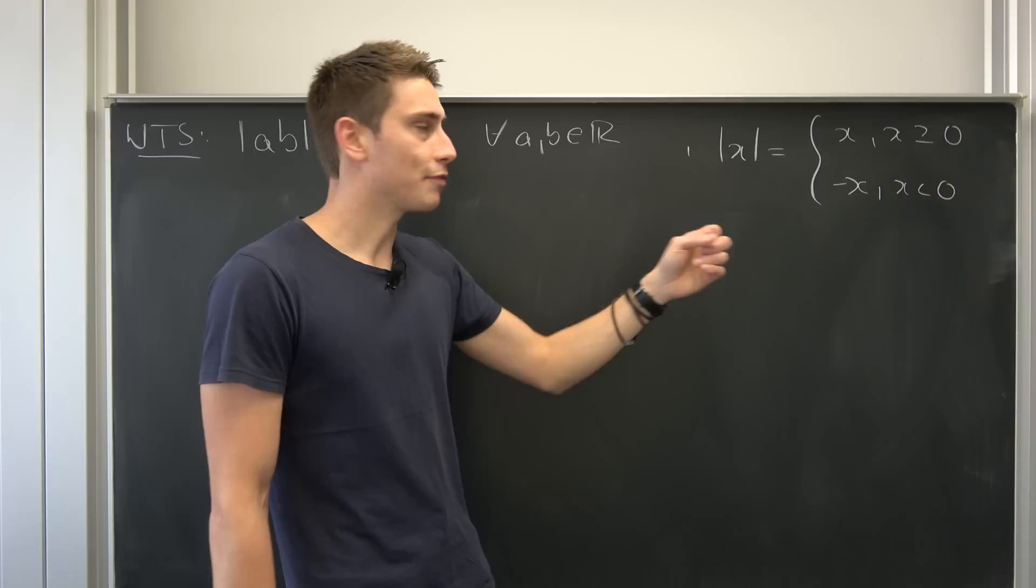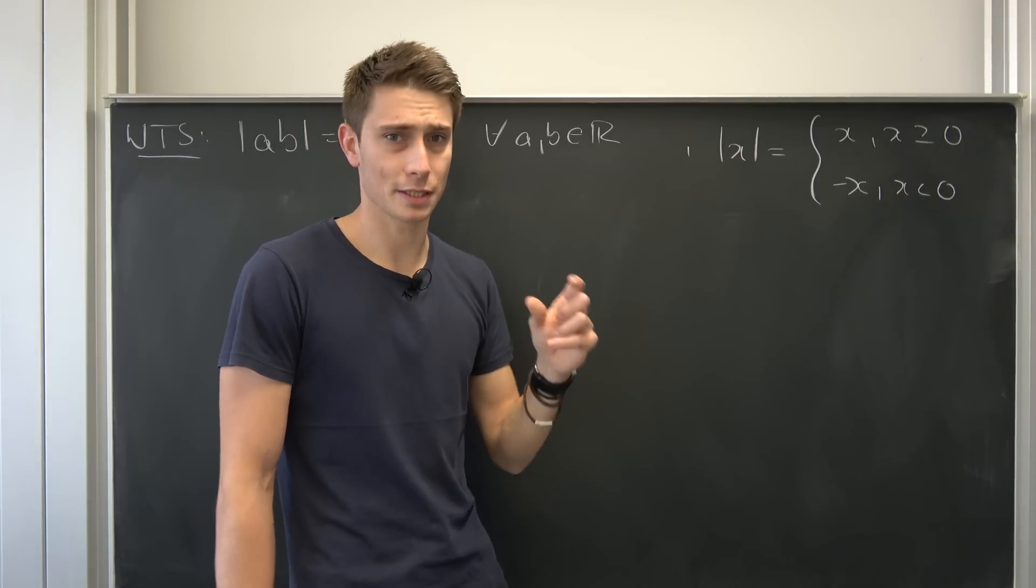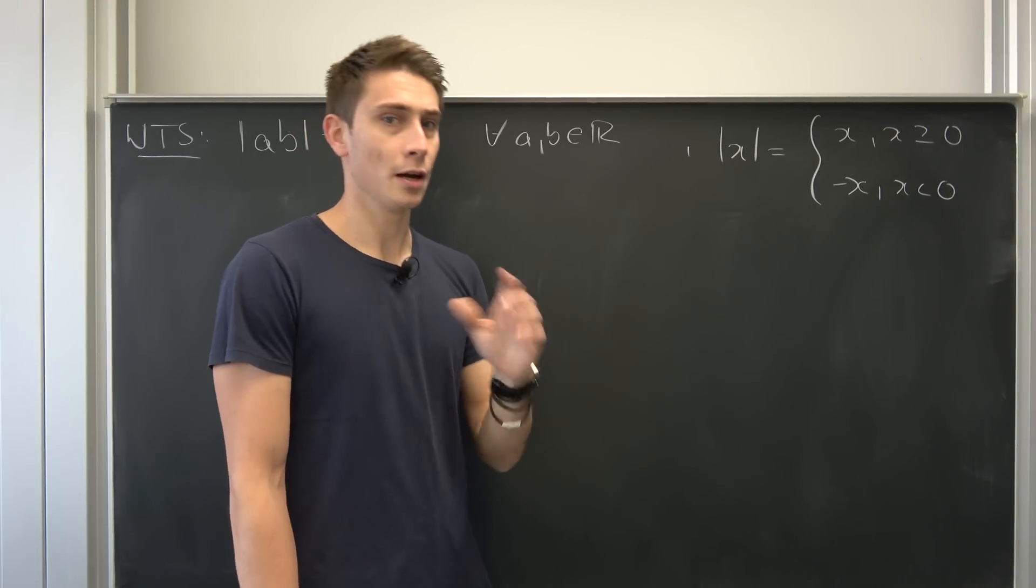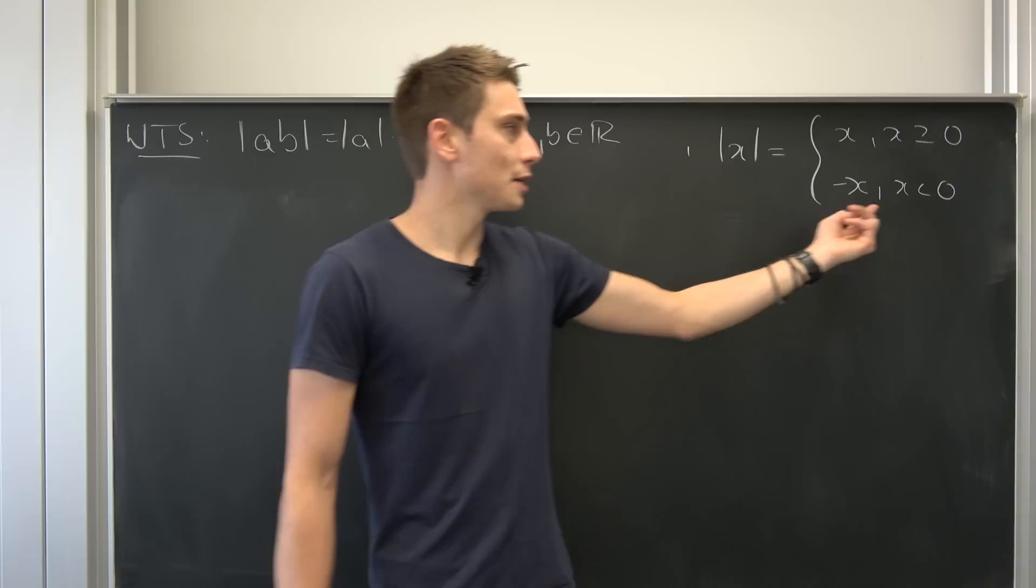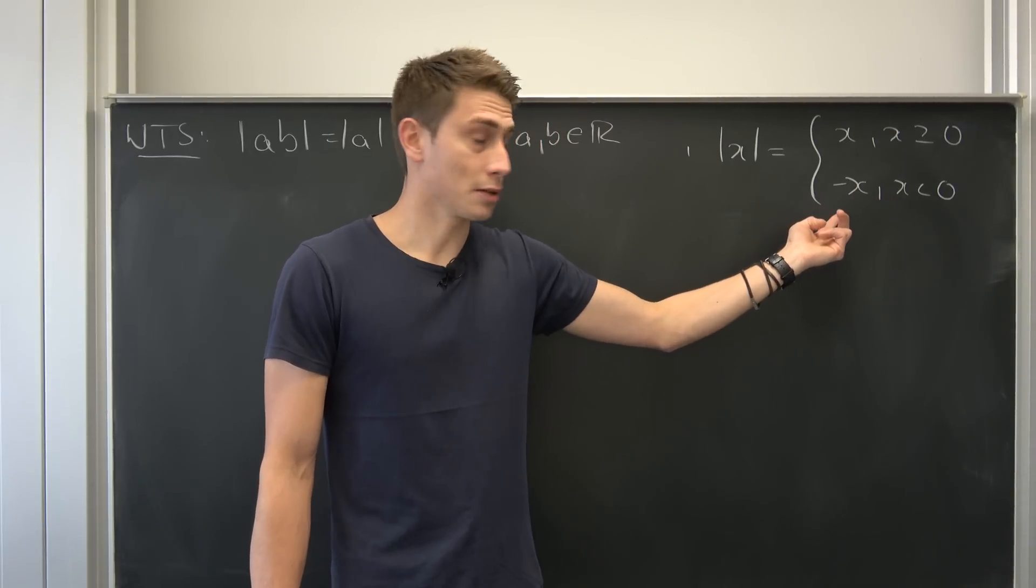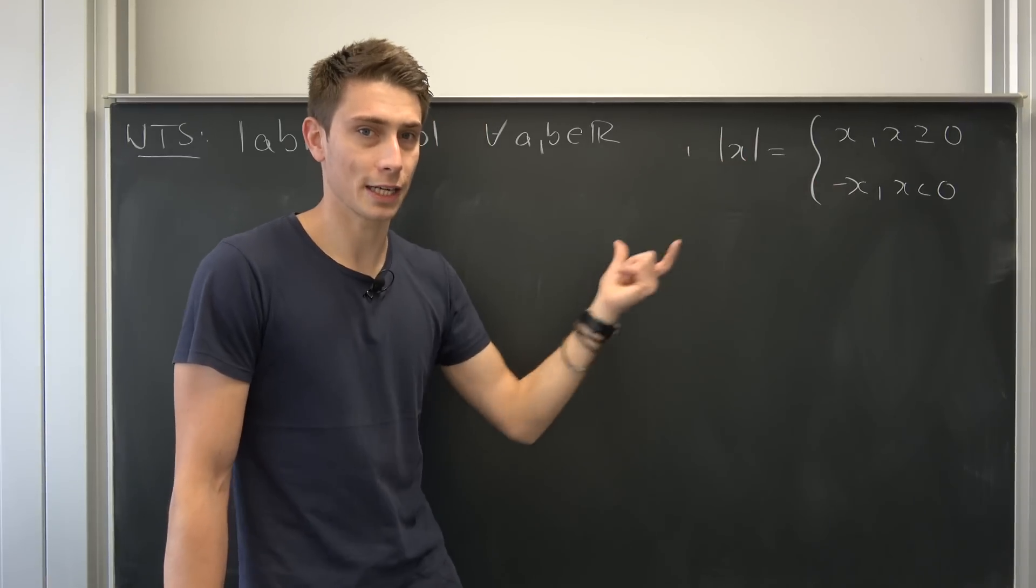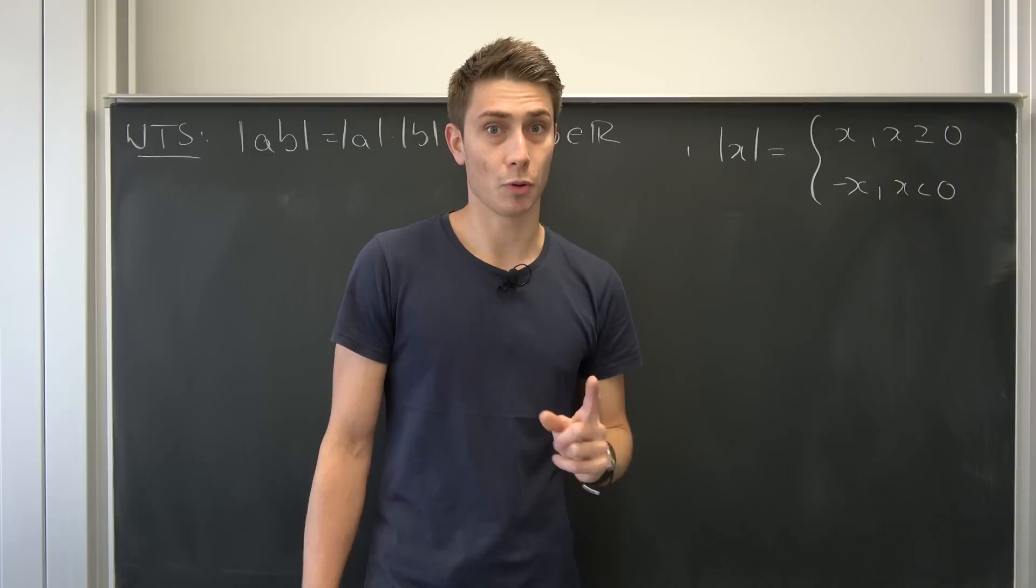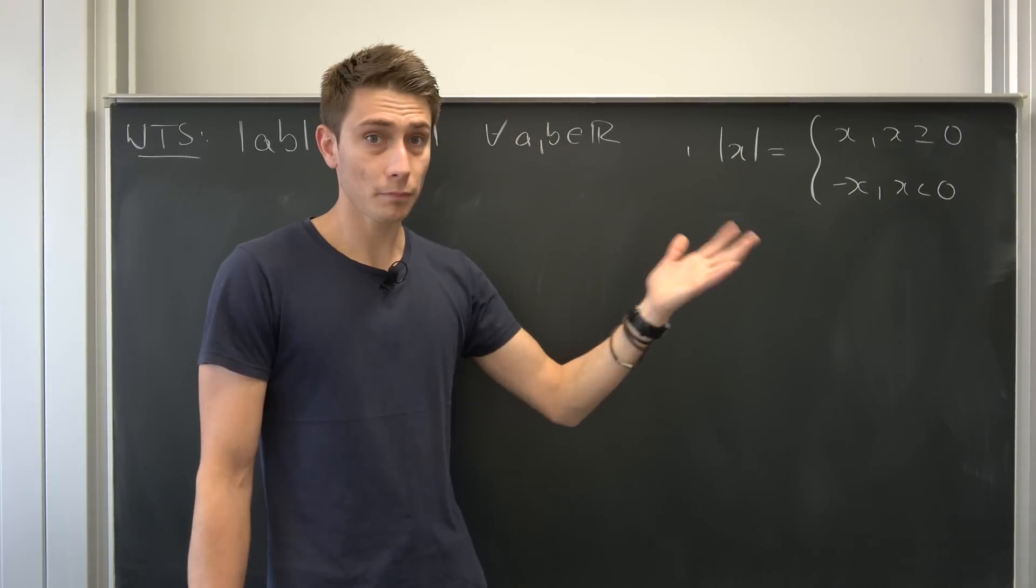Using a little example, imagine we have the absolute value of negative three. Well, this is going to result in positive three. We all know that. But why? Because our argument is less than zero, meaning we are going to take negative of this argument. Negative negative three is going to result in something positive. Positive three. There we go.